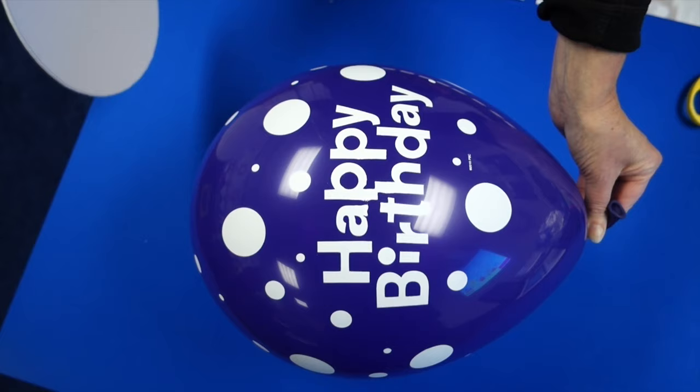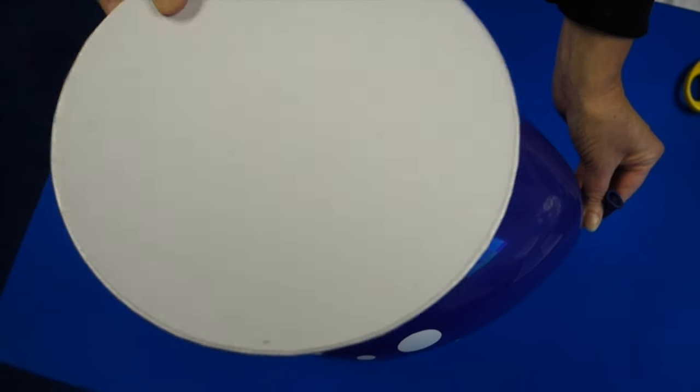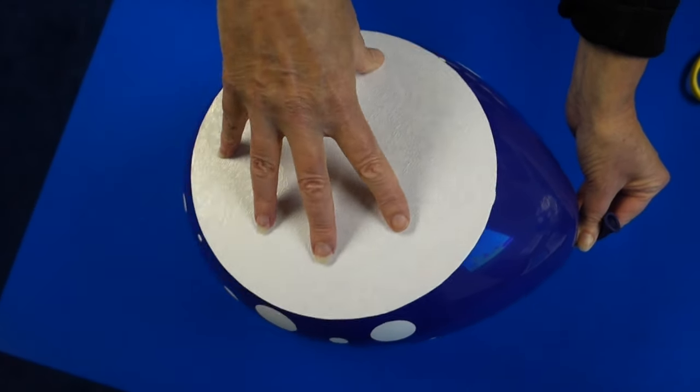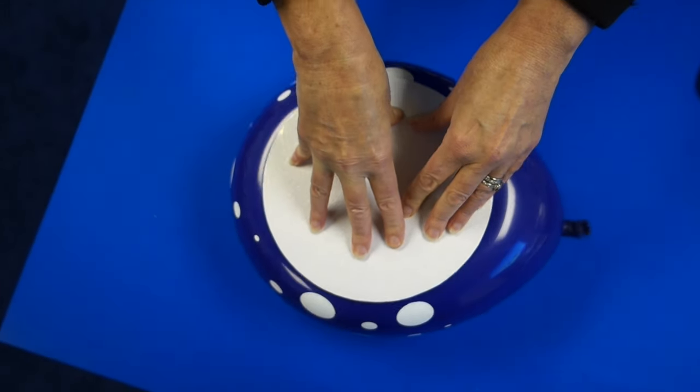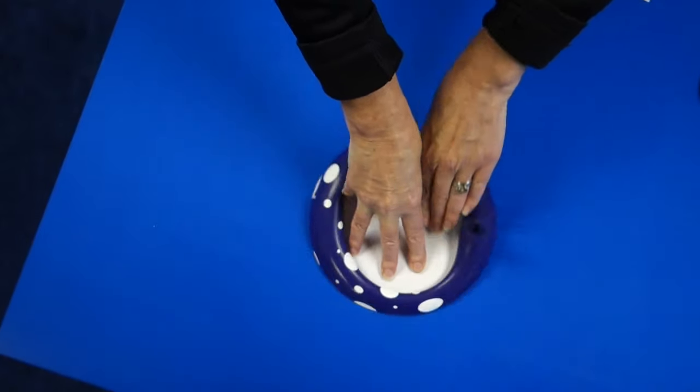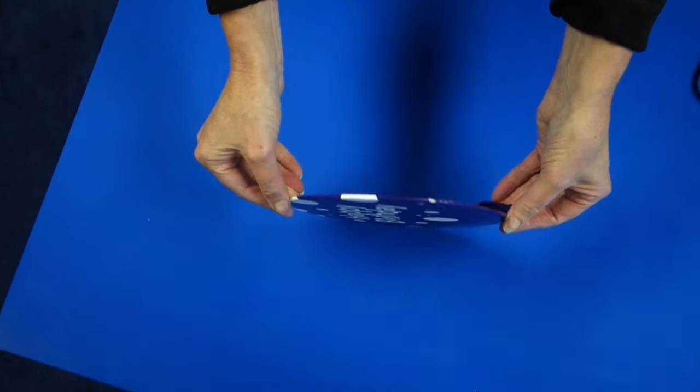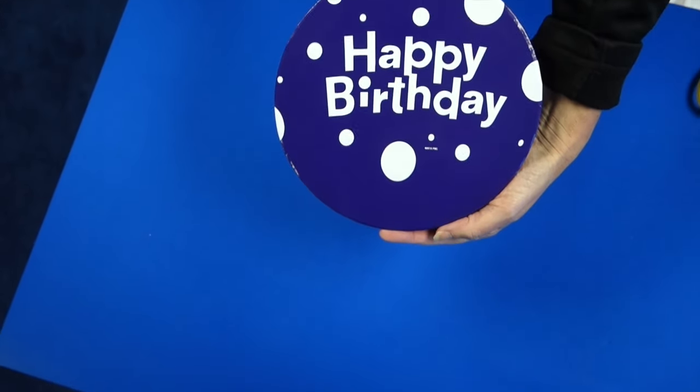So you start off by fully inflating the 11-inch balloon in this instance. You take your board, you rest it on top and you push down firmly. Once it's pushed down onto the base you'll find that the balloon will suck directly onto the board.